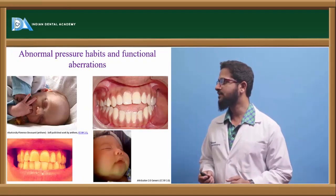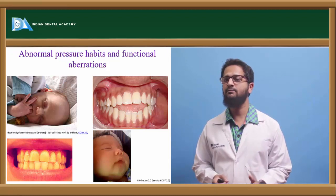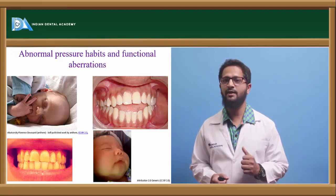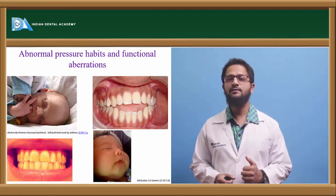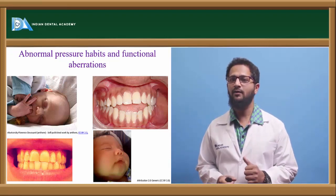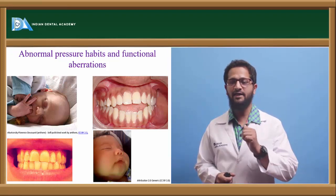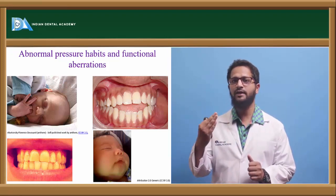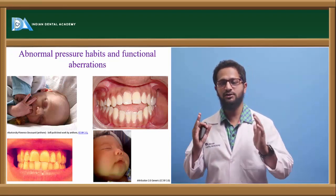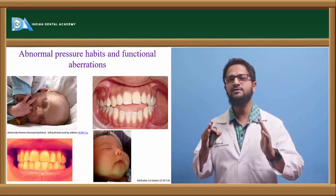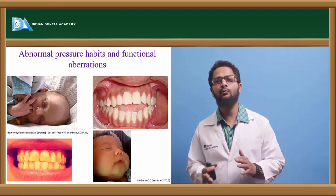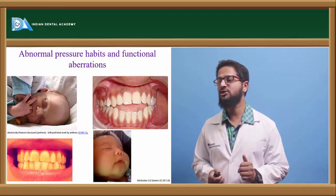Abnormal pressure habits play a very important role. Children during development can develop habits like thumb sucking and tongue thrusting. Thumb sucking creates pressure on the anterior palate, causing the anterior teeth to become proclined, and the sucking action causes the upper arch to become narrow. Tongue thrusting causes the child to develop an anterior open bite. These are abnormal pressure habits.